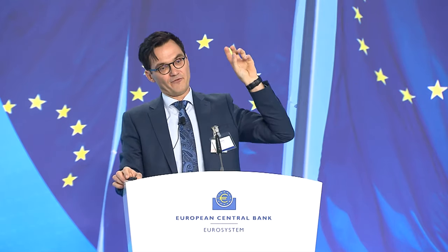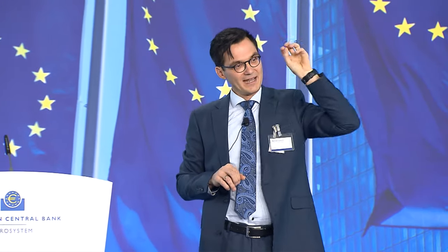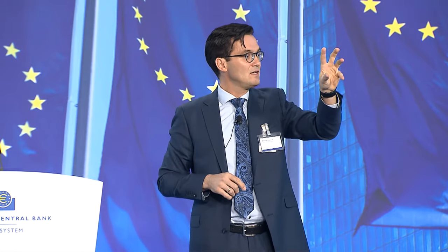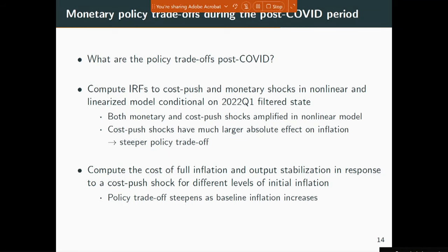With this in mind, I want to turn to the implications for policymaking — in particular monetary policy. Working with this model environment, what are the trade-offs for monetary policy makers? First, I'll walk through impulse response functions: we put the model in a position where it replicates exactly the data in the first quarter of 2022, then subject it to a cost-push shock — think Ukraine — or a monetary policy shock, and look at how different these responses are from normal times. In the second part, we look at the policy trade-off frontiers — how more complicated policymaking becomes once inflation has left the bay and how painful output losses can be.